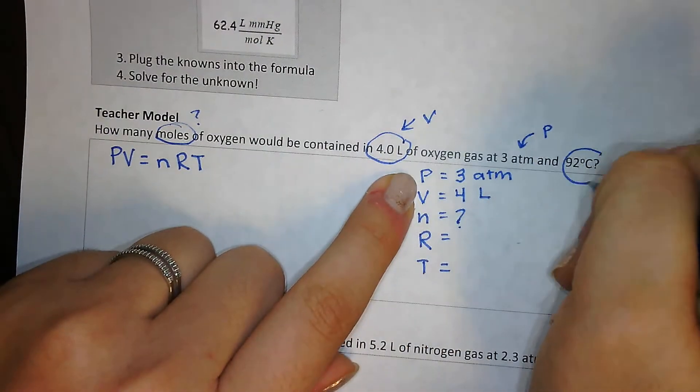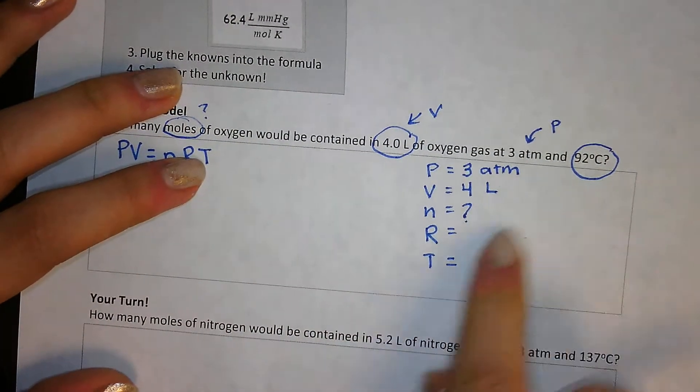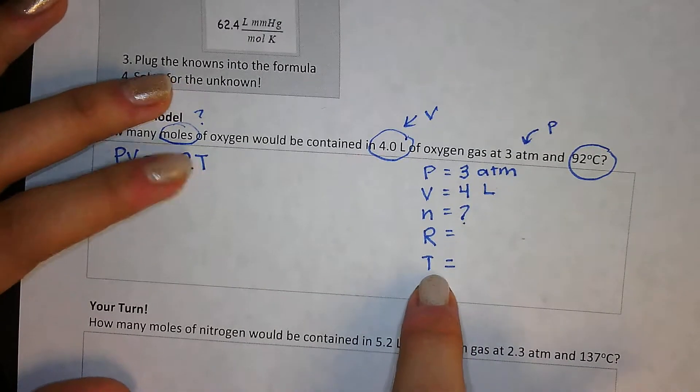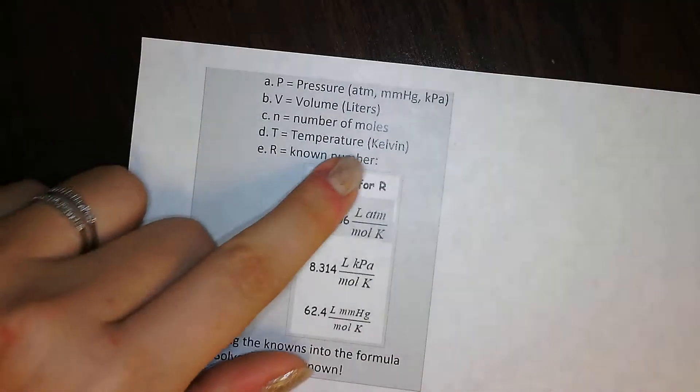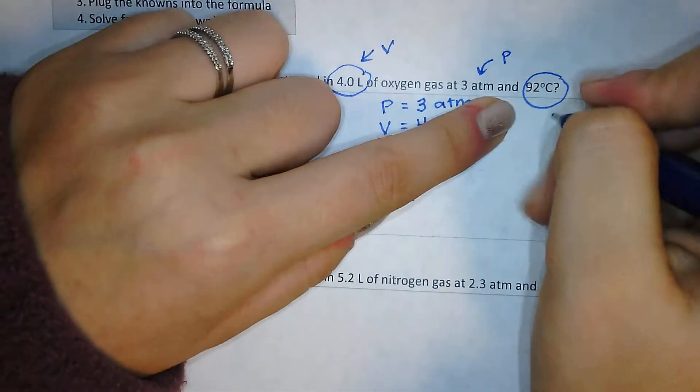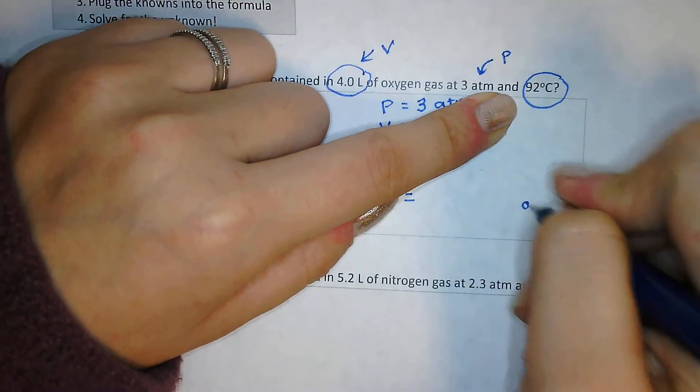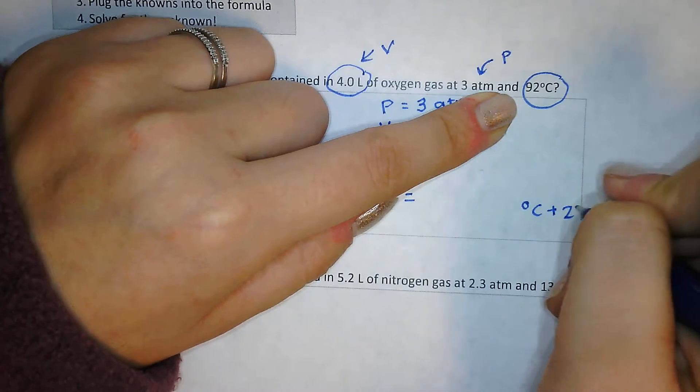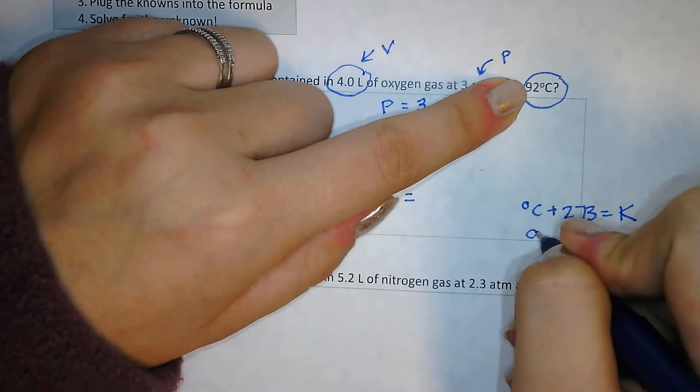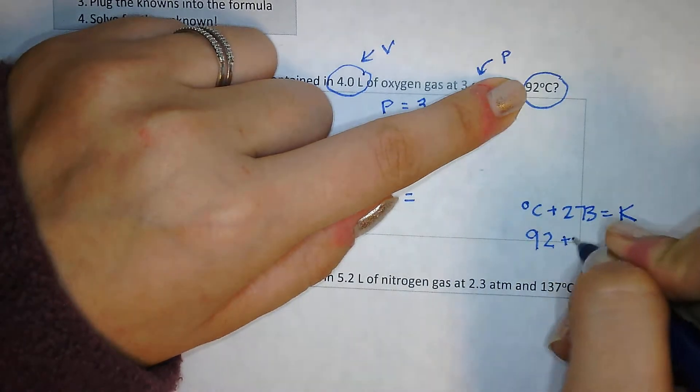And 92 degrees Celsius. So this is my temperature. But any time that you are talking about temperature with your ideal gas law, the temperature has to be in Kelvin. So I have to convert 92 degrees Celsius into Kelvin. And I do that by doing degrees Celsius plus 273 is equal to my Kelvin. I have 92 degrees Celsius plus 273.